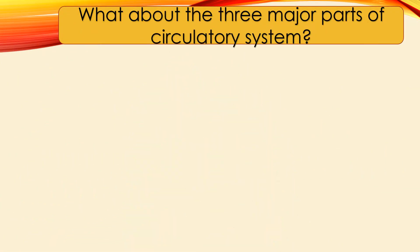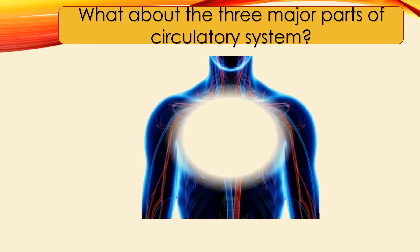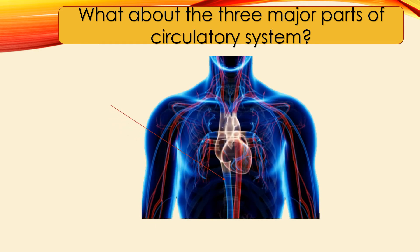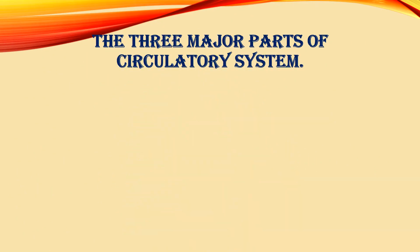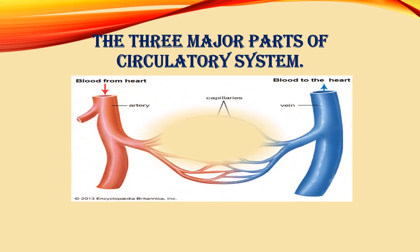What are the three major parts of the circulatory system? The major parts of the circulatory system are blood vessels, blood, and heart.